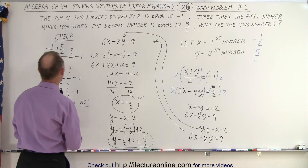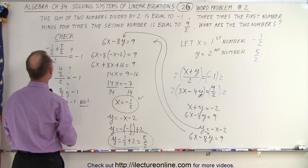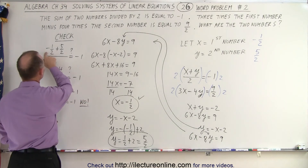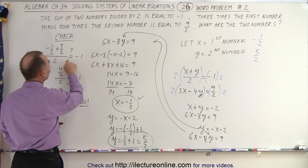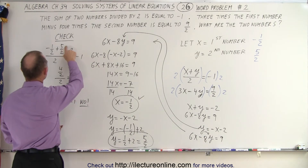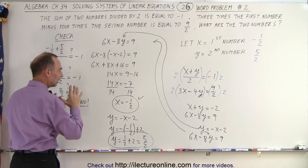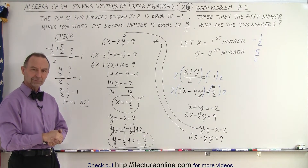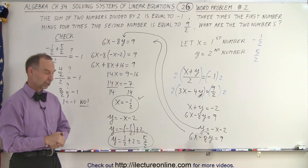Then I checked: adding negative one half plus 5 halves divided by 2 — is that equal to negative 1? That gives positive 4 halves divided by 2, which is 2 divided by 2, which is 1 equals negative 1. And it doesn't work. So I'm really at a loss why this doesn't work. Should I solve the problem on paper? Let me go look at my work.